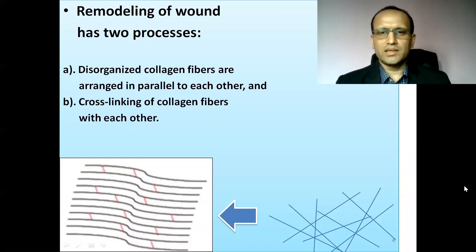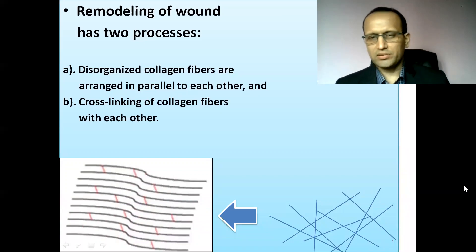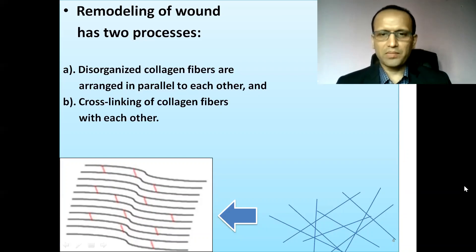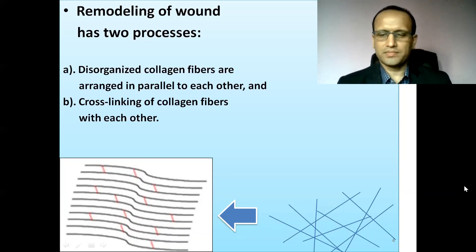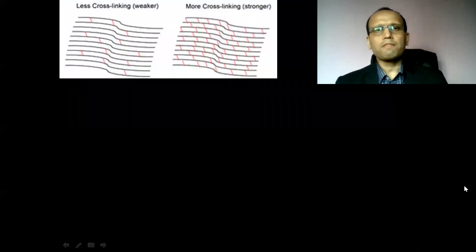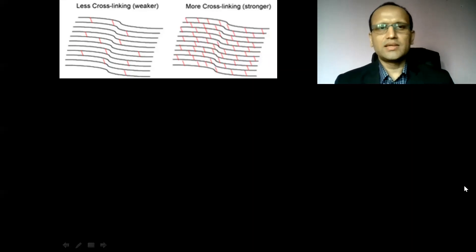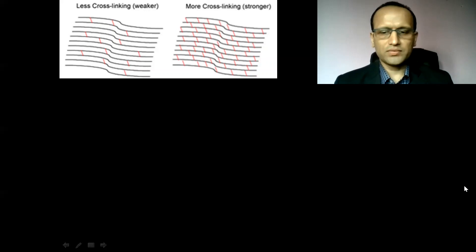In the illustration on the right side, you can see collagen fibers deposited in a haphazard manner. In the remodeling process, these haphazardly arranged collagen fibers are arranged in parallel to each other. Parallel arrangement of collagen fibers increases the strength of the network of collagen fibers.